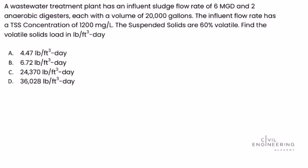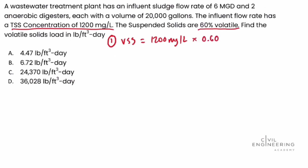The first step is to calculate the volatile suspended solids concentration. To do that, we use the total suspended solids concentration of 1,200 milligrams per liter and multiply by 60%, because the suspended solids are 60% volatile. Multiplying 1,200 mg/L times 0.60, we get a volatile suspended solids concentration equal to 720 milligrams per liter.